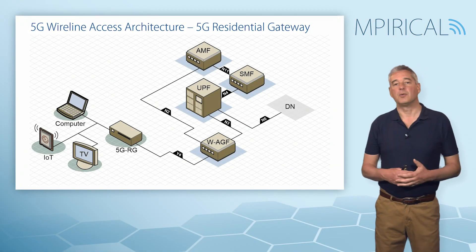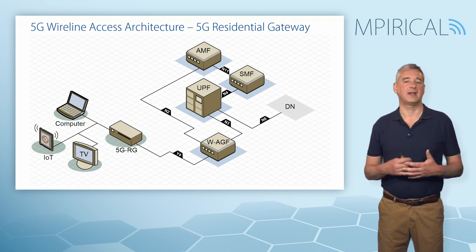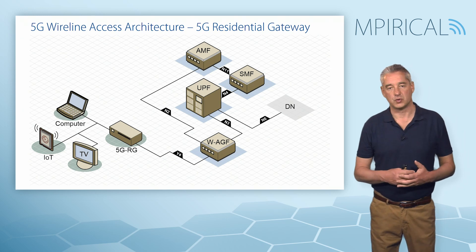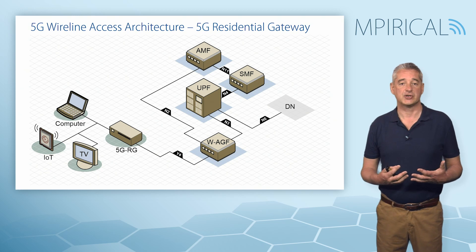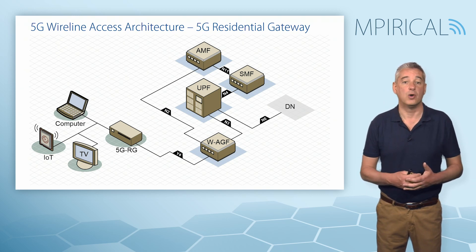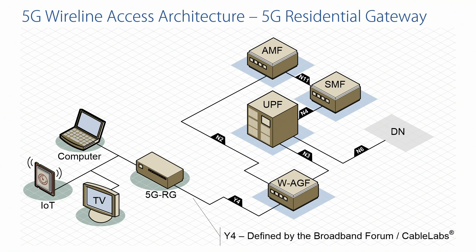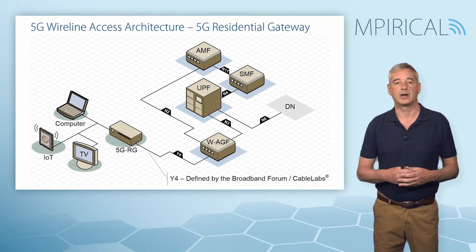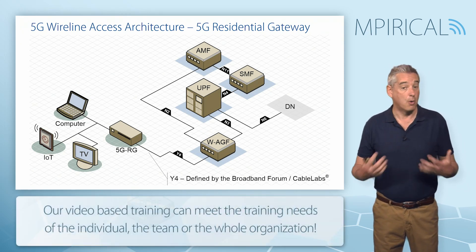The first part of the network architecture we're going to look at are the residential gateways, which come in two flavors. The first is the 5G Residential Gateway, seen at the bottom of the screen. This provides the connection from various home network devices — computers, IoT devices, televisions — across the Y4 reference, which is our cable or broadband network, arriving into the 5G network through a node we refer to as the Wireline Access Gateway Function.